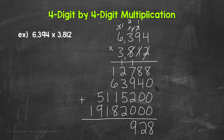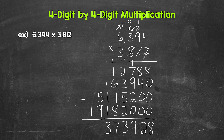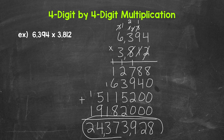Then 1 plus 2 is 3, plus 3 is 6, plus 5 is 11, plus 2 is 13 — write the 3, carry the 1. Then 1 plus 1 is 2, plus 6 is 8, plus 1 is 9, plus 8 is 17 — write the 7, carry the 1. Then 1 plus 1 plus 1 gives us 3. Then 5 plus 9 is 14 — write the 4, carry the 1. And we end with 1 plus 1, which is 2. Let's put the commas in — every 3 numbers. So our final answer is 24,373,928.